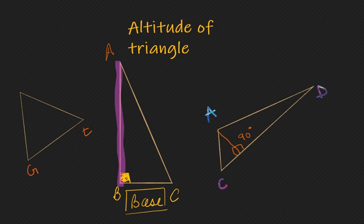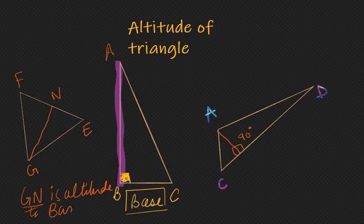For triangle DEF, if we want to draw height of this triangle, altitude for this triangle, this is GN. GN is altitude to the base. The base is FE, here the base is CD, so these are altitude.